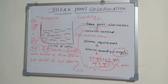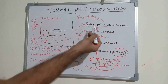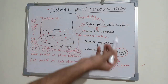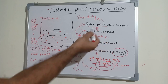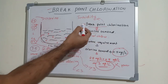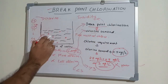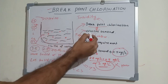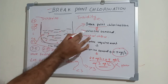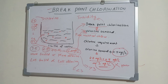That's all about breakpoint chlorination — it is a very simple concept. Sometimes you may get confused about what is breakpoint chlorination versus chlorine demand. They are more or less similar: breakpoint chlorination is the moment when free residual chlorine appears, and chlorine demand is the technical term for that particular amount of chlorine required. That is breakpoint chlorination.